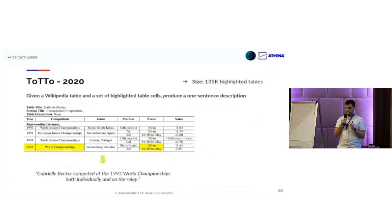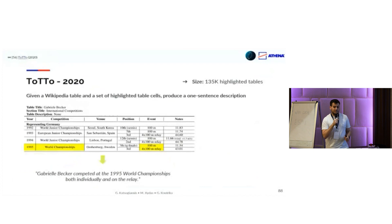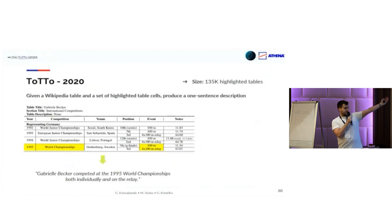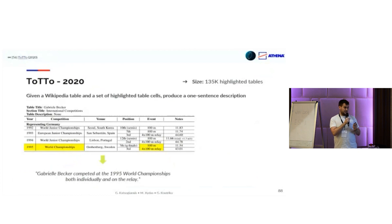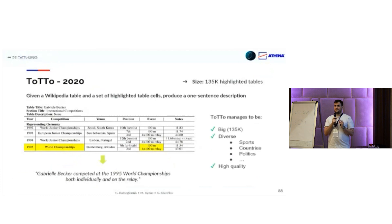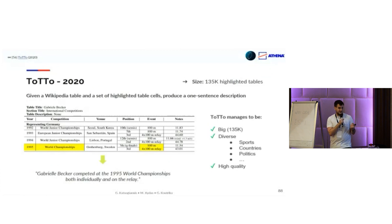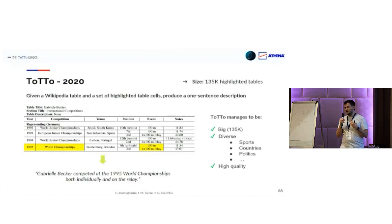And now ToTTo, which is one of the most influential and newest datasets. Given a Wikipedia table and a set of highlighted cells, we produce a one-sentence description. For example, given a Wikipedia table about Gabriel Becker and some highlighted cells, the verbalization describes only the information shown on those highlighted cells, not the whole table. ToTTo has three big qualities: it is big with 135,000 data points, it is diverse spanning many domains like sports, countries, entertainment, and movies, and it is of really high quality.